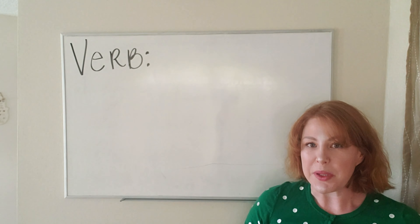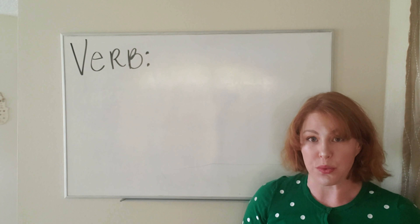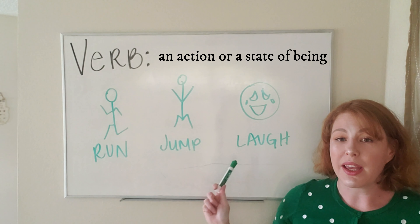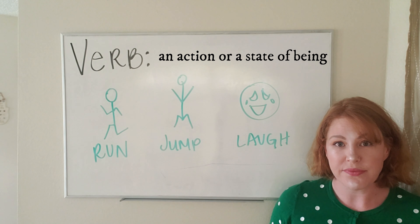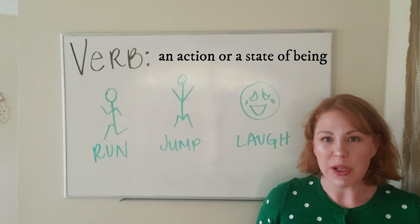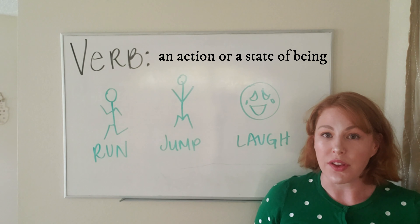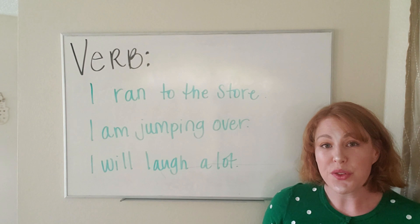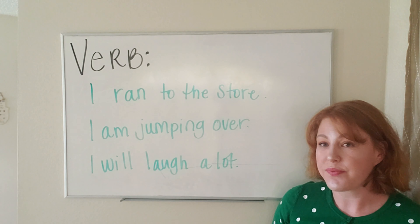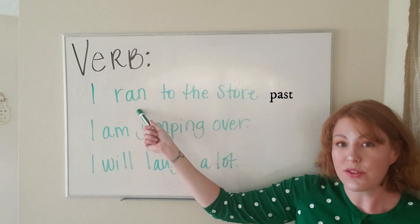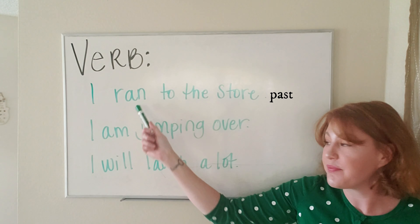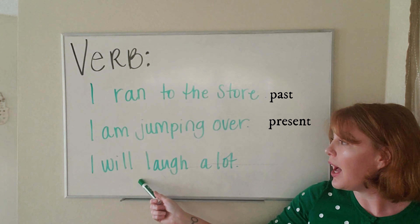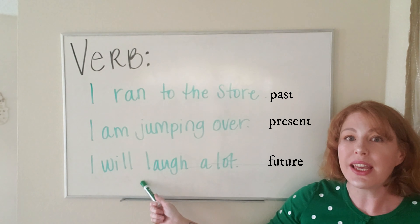The next part of speech is a verb. Verbs are action words or state of being. Run, jump, and laugh are all different types of verbs. When we use verbs in our sentences, we more often will use the verb in a specific tense. In our sentences, we use three different types of tenses. 'I ran to the store' is past tense. 'I am jumping over' is present tense. 'I will laugh' is future tense.